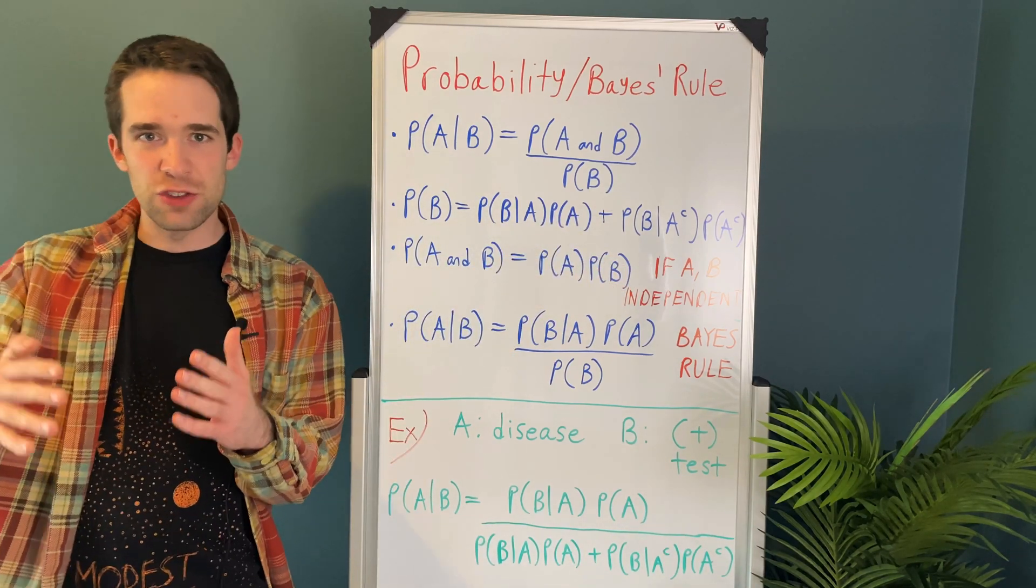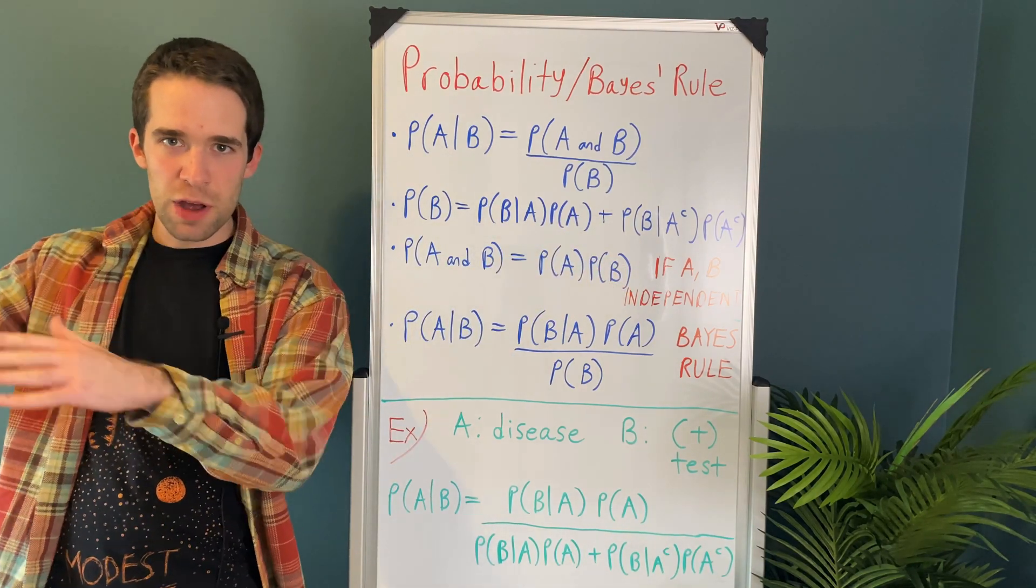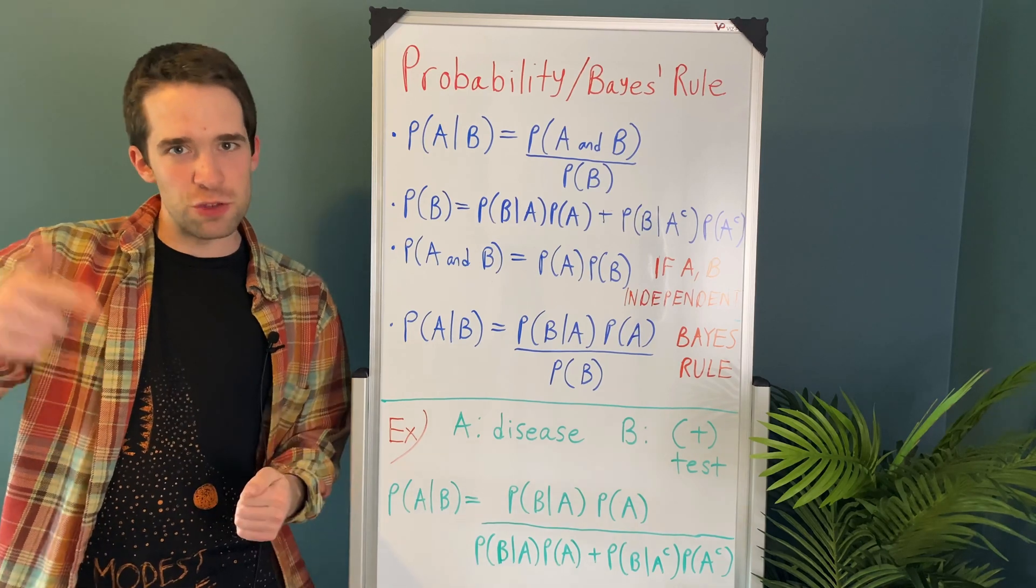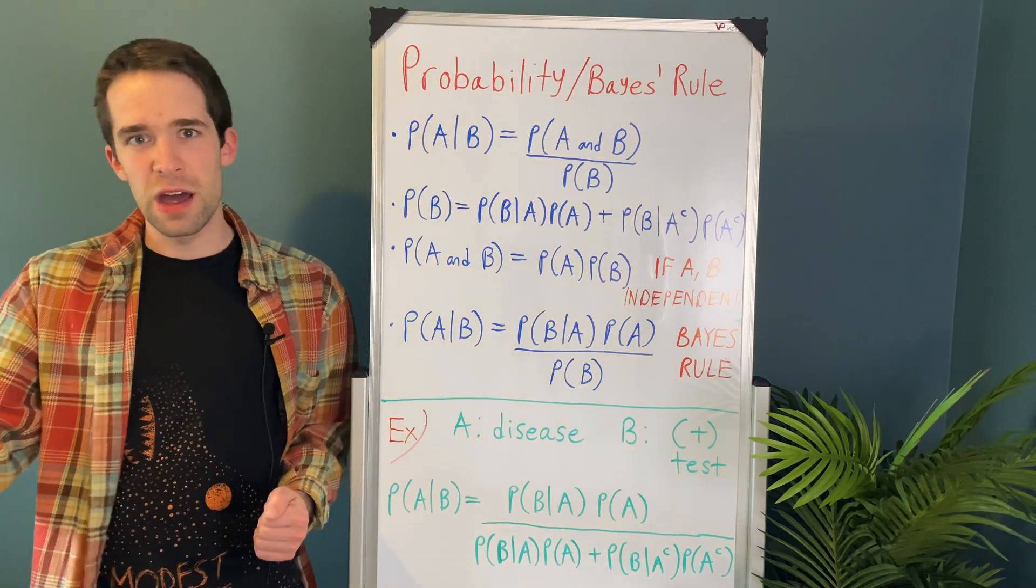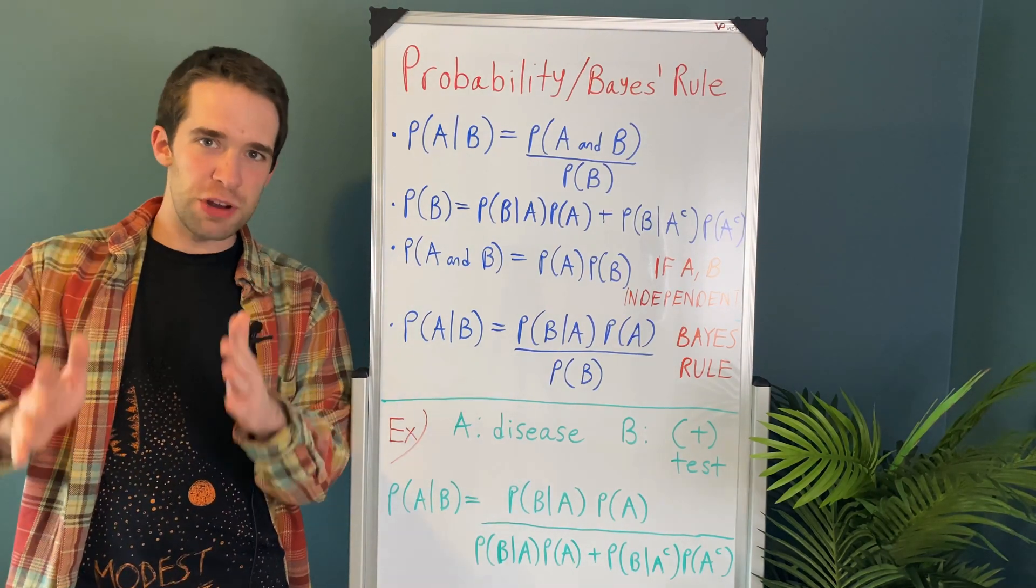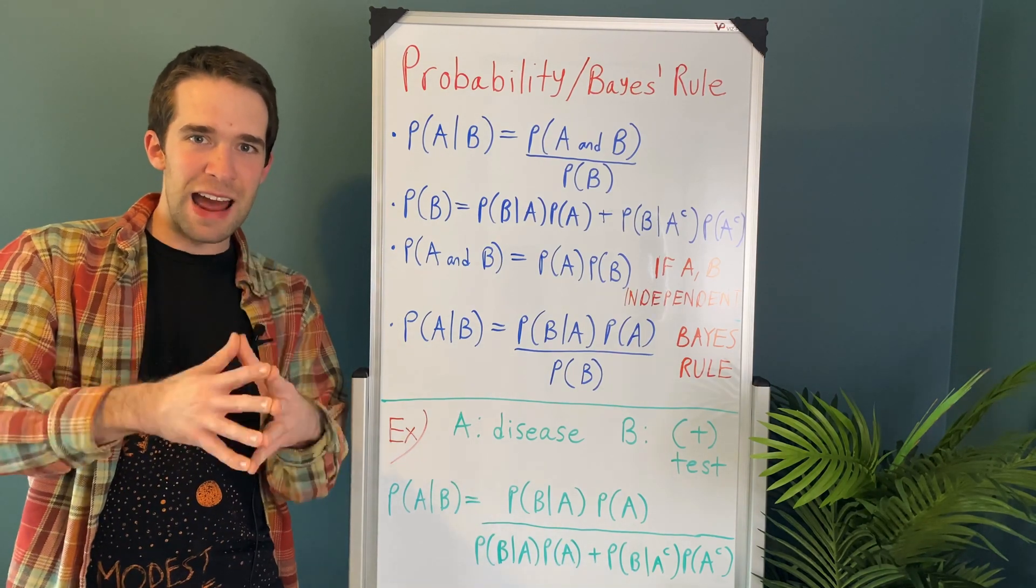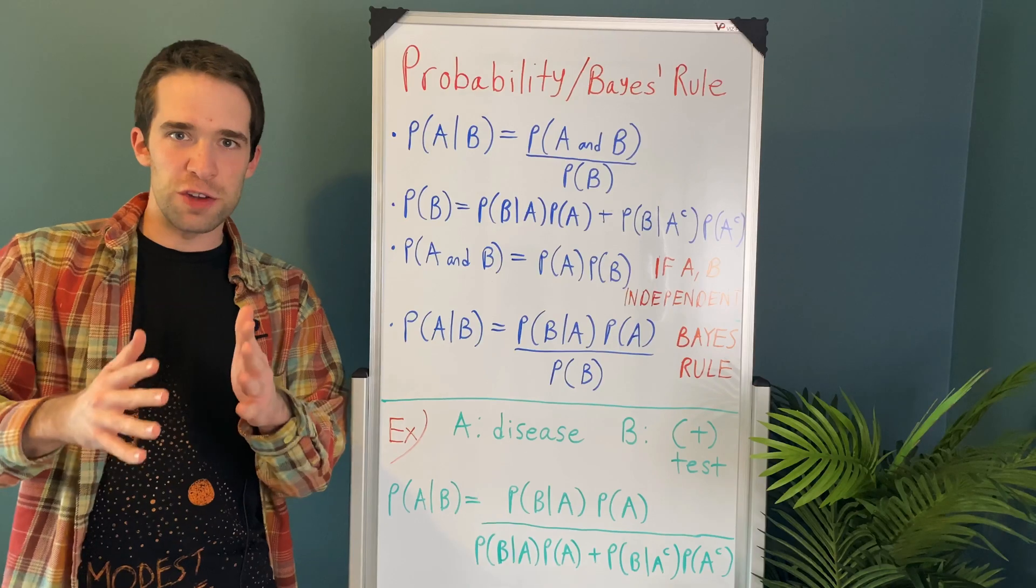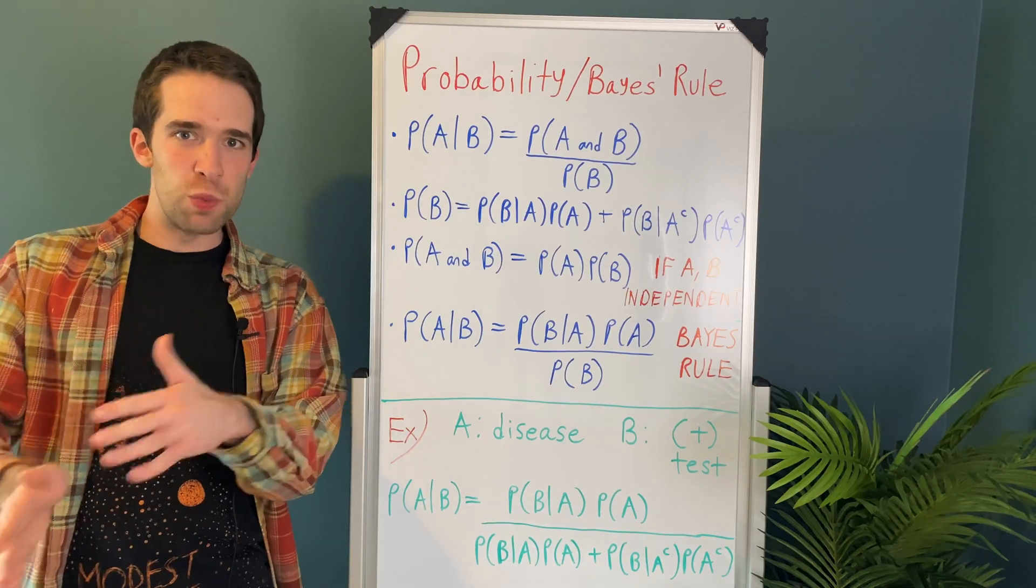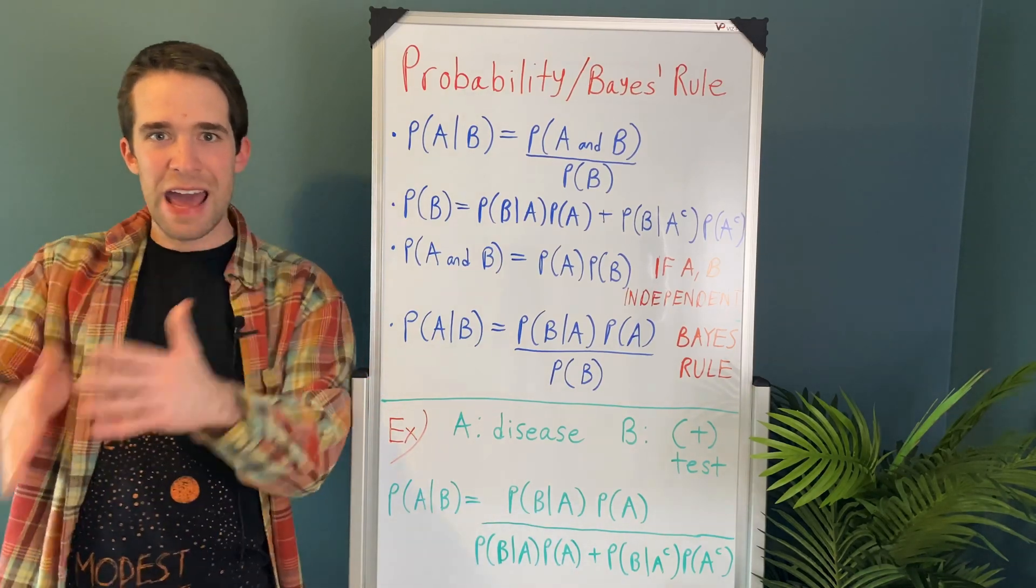Where A complement is just A doesn't happen. So the probability of A complement is just 1 minus the probability of A. This rule is actually pretty intuitive when you think about it, because all it is is breaking down the probability of B across both scenarios: what happens when A occurs and what happens when A doesn't occur.